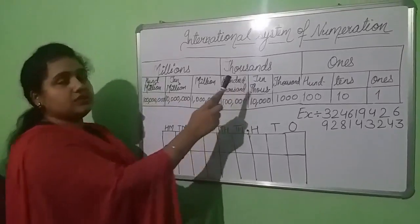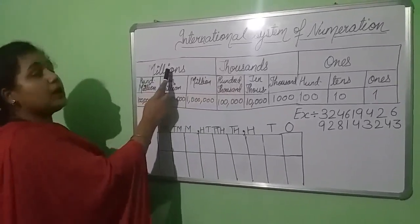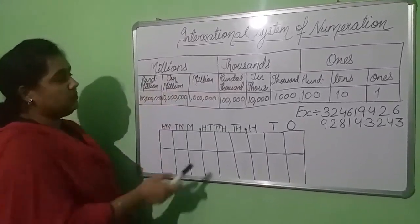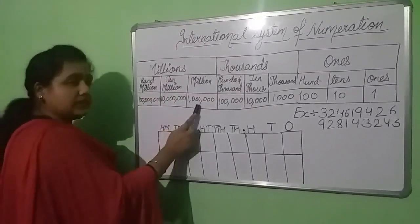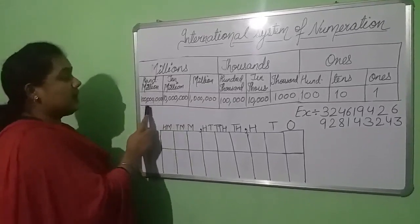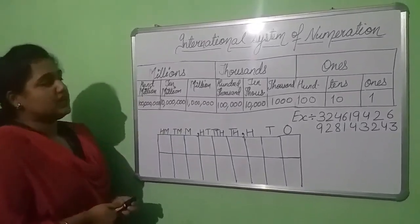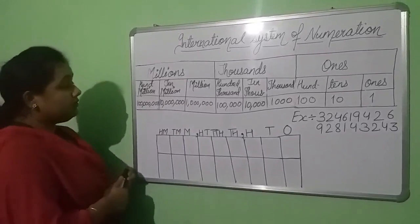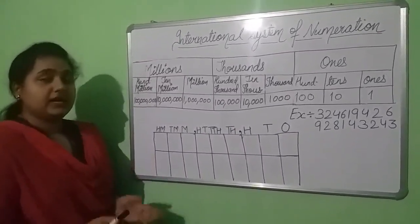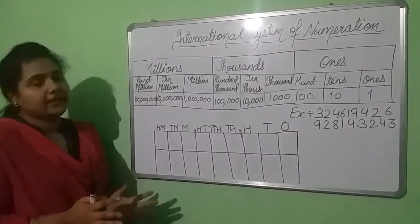After thousand, the next period is millions. And in this also we have three place values: millions, ten millions, and hundred millions. As I told you in the previous class, we separate periods by putting a comma. It helps us to read and write any number.